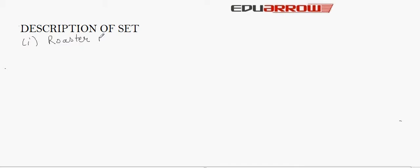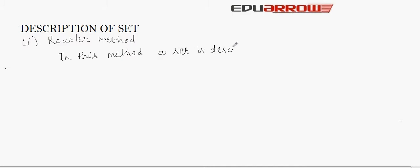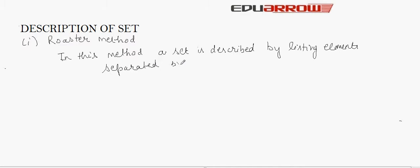Description of a set. A set can be described in two ways. The first form is the roster form. In this method, a set is described by listing elements separated by commas within curly braces.